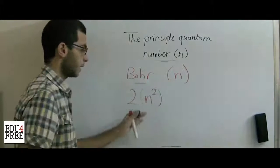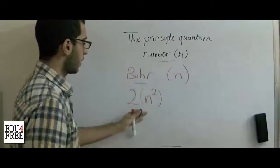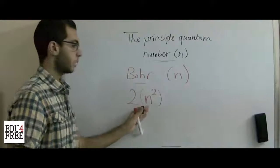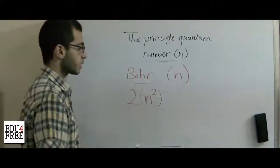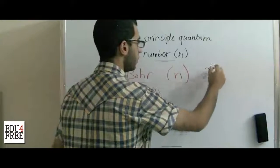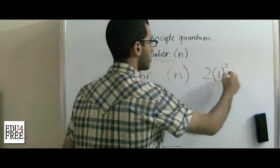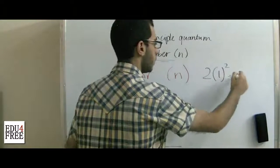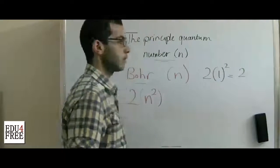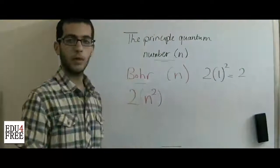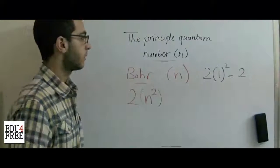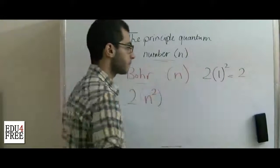Let's apply this rule for the first energy level: n equals 1, so it will be 2 multiplied by 1 squared, which is 2 times 1, giving 2. So the maximum number of electrons in the first energy level is 2 electrons.